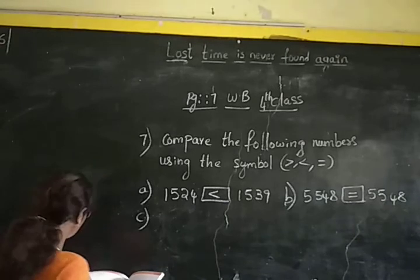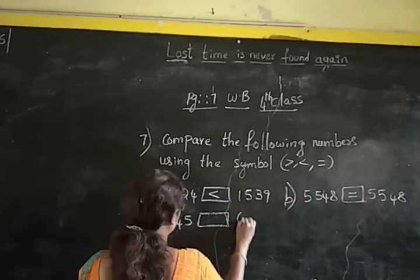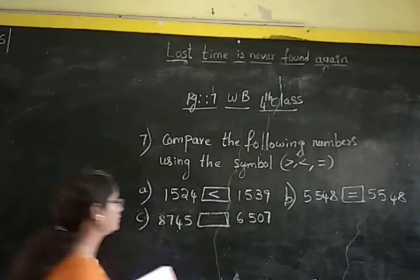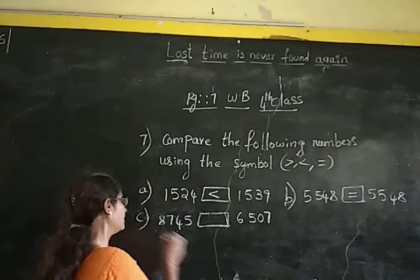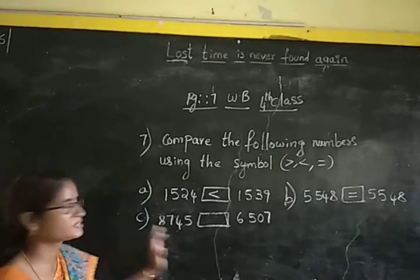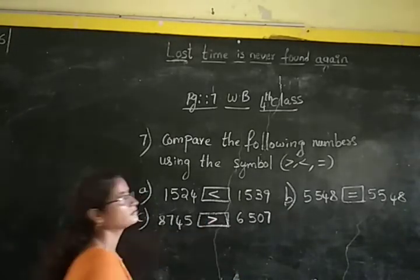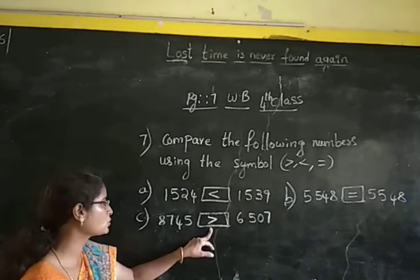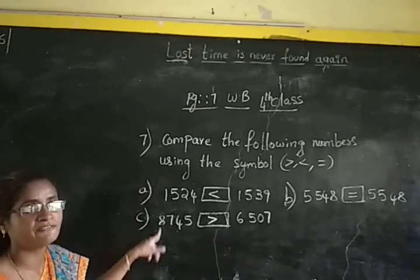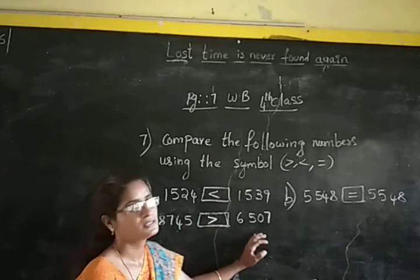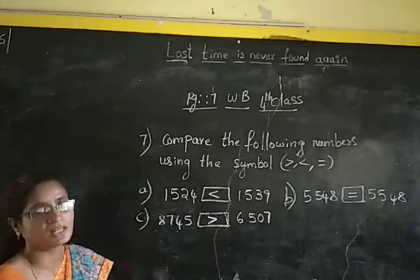Next: 8,745 and 6,507. Both numbers have 4 digits. In thousands place, this number is having 8 and this number is having 6. Since 8 is bigger than 6, we put the greater than symbol. Greater than symbol shows that the first number is bigger than the second number — 8,745 is bigger than 6,507.